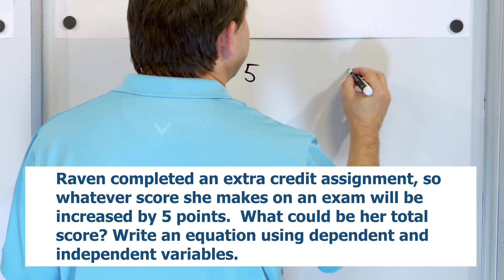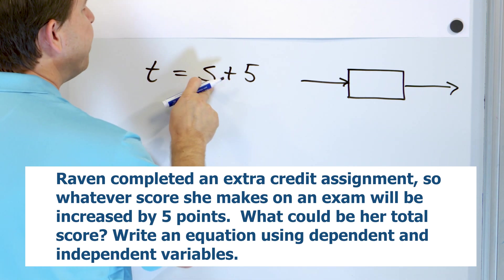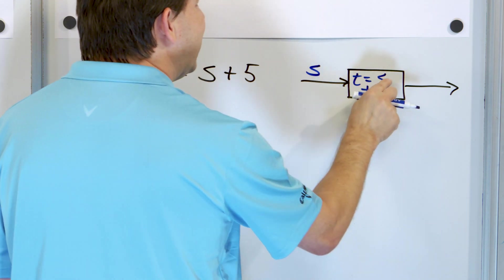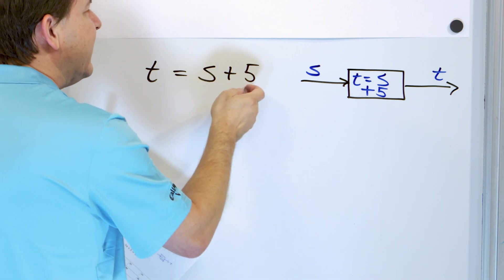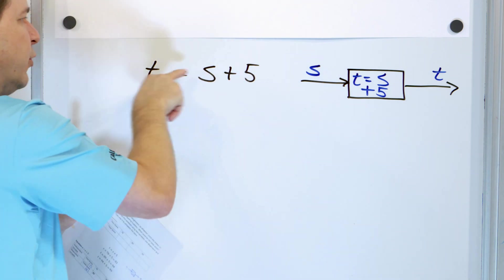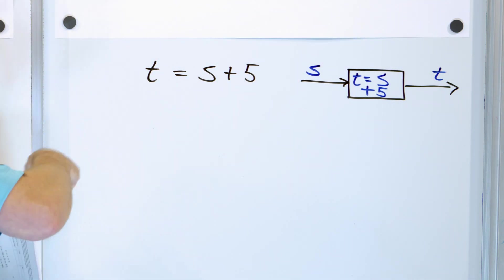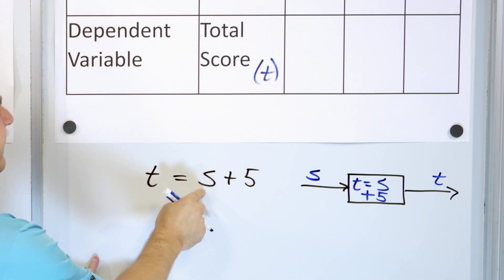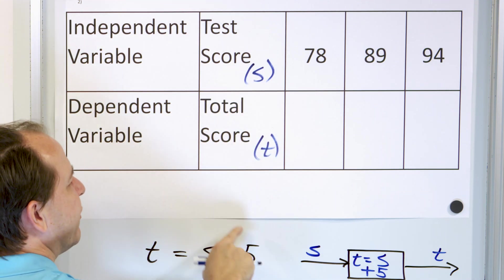If we draw a picture: we feed in her base score S, the function adds five to it — T equals S plus five — and the total score T comes out the other side. So if I put a test score of 80 in, 85 comes out. If I put 95 in, 100 comes out. If I put 70 in, 75 comes out. The dependent variable is T, the total score. It depends on the input values — the base test score S, which is the independent variable.